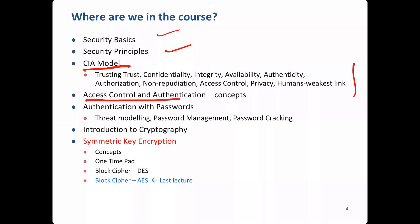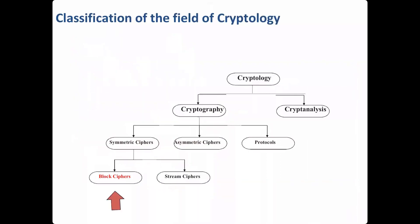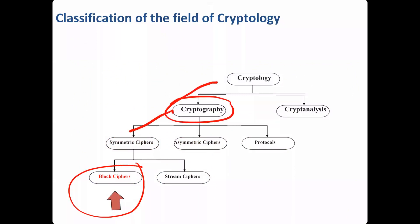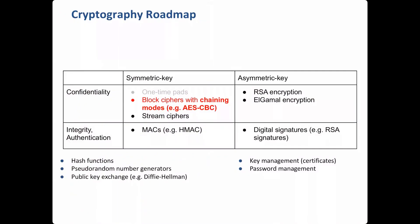We have looked at access control mechanisms, passwords, etc., and then we started cryptography. We have completed one-time pad, block ciphers, DES, and AES, which we did in the last class. We are now in block ciphers. There are two types of ciphers: symmetric cipher and asymmetric cipher. In symmetric encryption we are into block ciphers, and we will touch upon stream ciphers later.